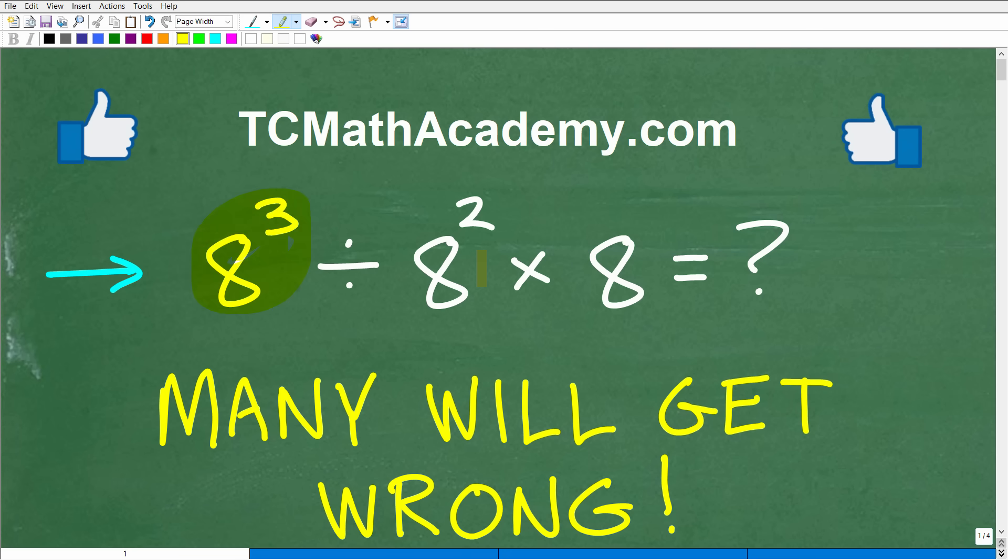The problem is 8 cubed divided by 8 squared times 8, and we want to get this down to one value. Now, we don't want to use our calculator, so put those calculators away.